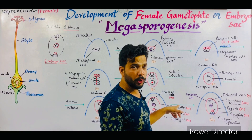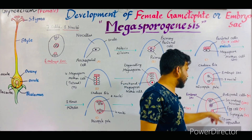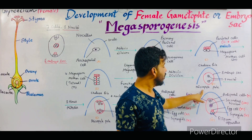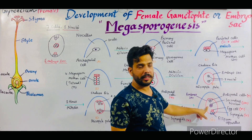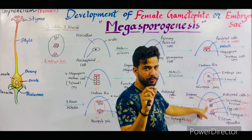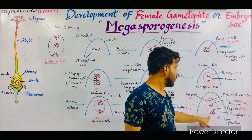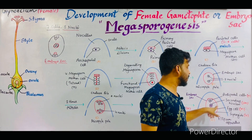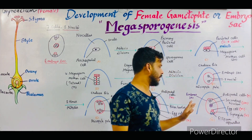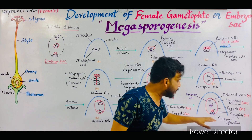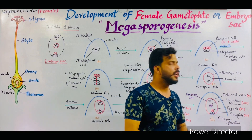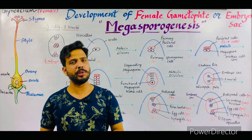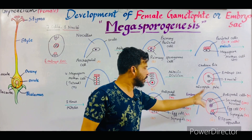In the final structure of the embryo sac: three antipodal cells are present at the chalaza pole; one diploid central cell is in the center consisting of two nuclei formed by fusion of the two polar bodies; and at the micropyle pole there are three cells collectively known as the egg apparatus, in which two are synergids and one is the egg cell — both are haploid in nature. There are also filamentous structures termed the filiform apparatus, which help in the process of fertilization — I will describe their function in my next video.